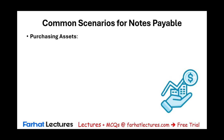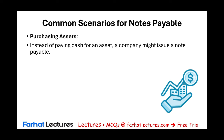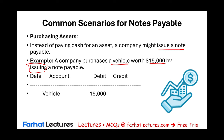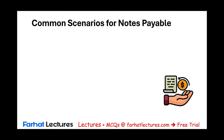Another scenario is making a purchase. Instead of paying cash for an asset — a truck, refrigerator, or office furniture — the company might issue a note. For example, a company purchases a vehicle worth $15,000 by issuing a note. The vehicle is debited, and notes payable is credited, creating a liability. The company signed a promise to pay the $15,000.